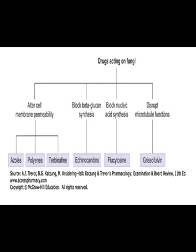Another classification is based on mechanism of action of antifungal drugs. There are four categories: drugs that alter membrane permeability (azoles, polyenes, terbinafine); drugs blocking beta-glucan synthesis in the fungal cell wall (echinocandins); a single drug that blocks nucleic acid synthesis; and griseofulvin, given orally, which disturbs microtubular function and also inhibits nucleic acid synthesis.